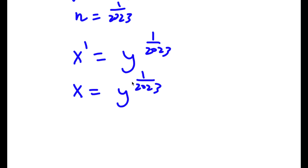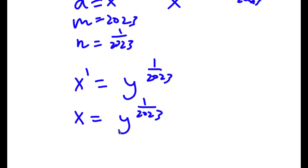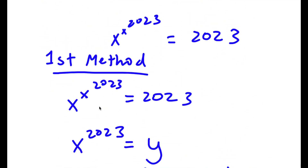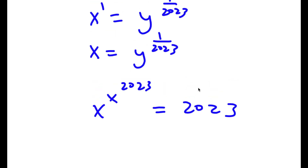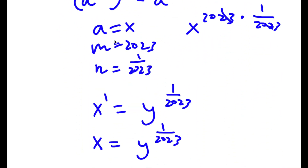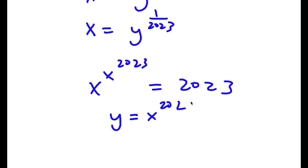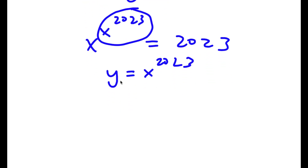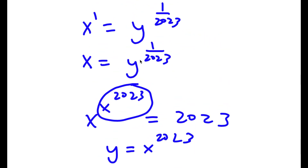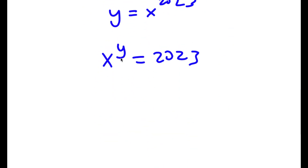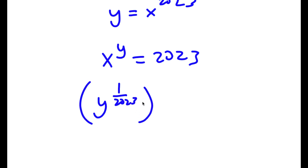Now that we have our value for x, remember our original equation was x to the power of x to the power of 2023 is equal to 2023. And remember we set y equal to x to the power of 2023. So now, if y is equal to x to the power of 2023, I'm going to replace that with y. So now I have x to the power of y is equal to 2023. And since x is equal to y to the power of 1 over 2023, I can replace x with y to the power of 1 over 2023, and then I have this to the power of y, which is equal to 2023.